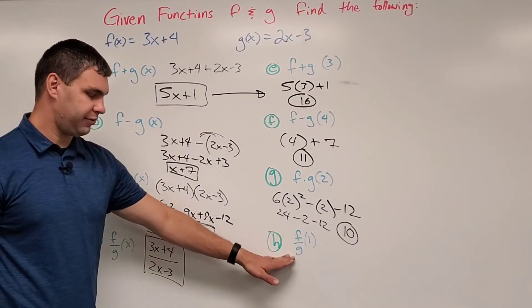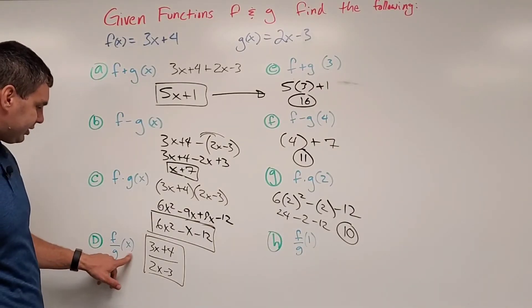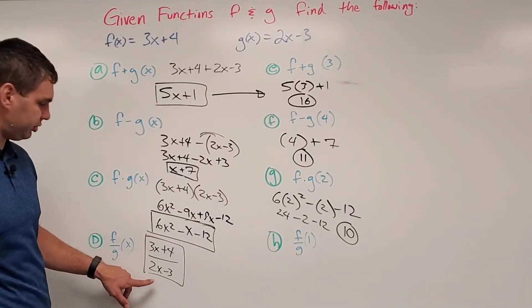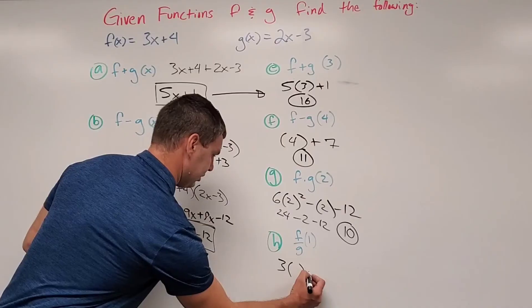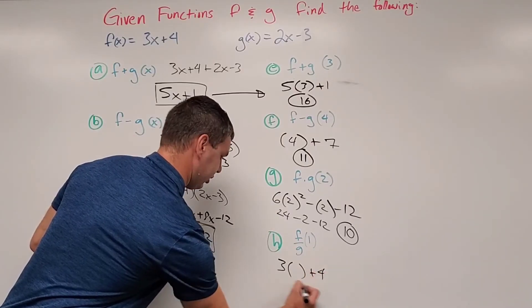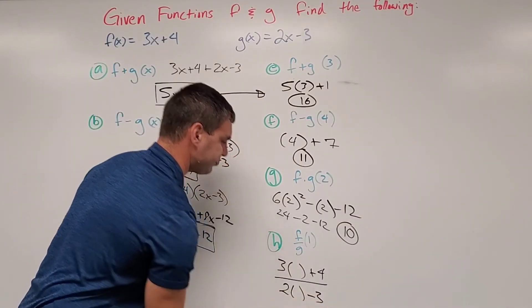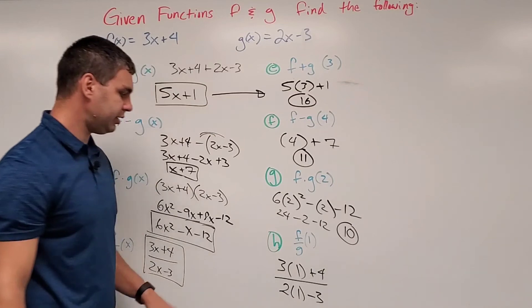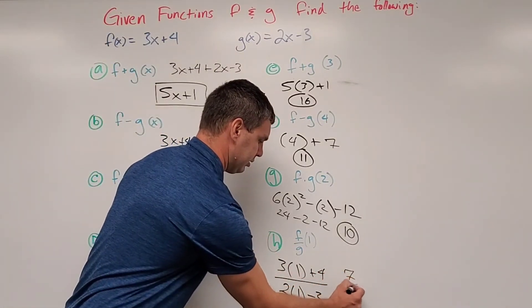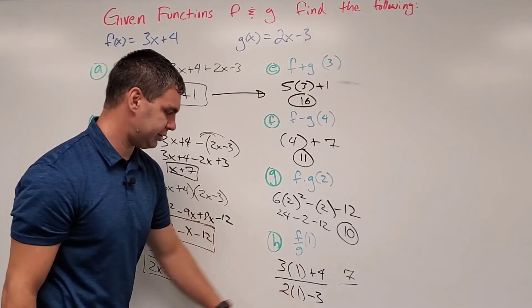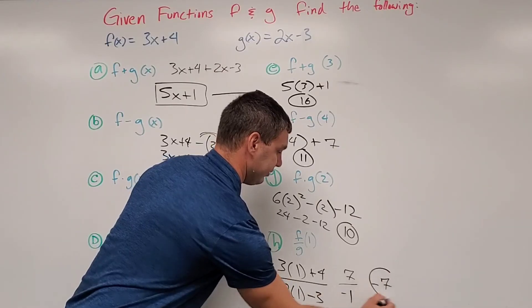And then last one, f over g of 1. Well, f over g of x was 3x plus 4 over 2x minus 3. So let's see here. 3 blank plus 4 over 2 blank minus 3. In those blanks, I'm putting a 1. 3 times 1 is 3 plus 4 is 7 over 2 minus 3 is negative 1. And of course, that simplifies to be negative 7.